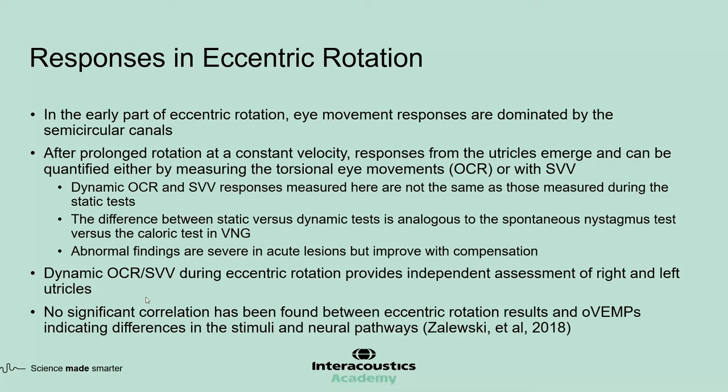These responses can be quantified by measuring torsional eye movements via OCR or with SVV — now called dynamic OCR and dynamic SVV, which are not the same as the static measurements. The difference between static versus dynamic measures is analogous to spontaneous nystagmus versus the caloric or rotation chair test. Abnormal findings are severe in acute lesions but improve with compensation. No significant correlation has been found between eccentric rotation results and VEMPs, indicating differences in stimuli and neural pathways.